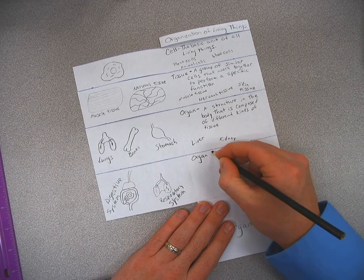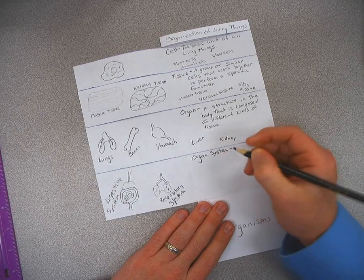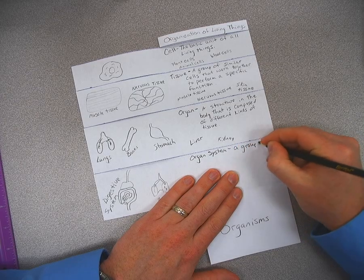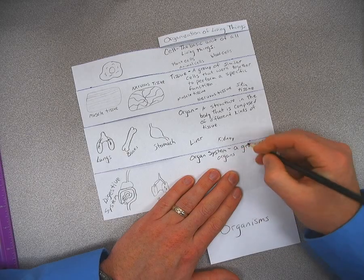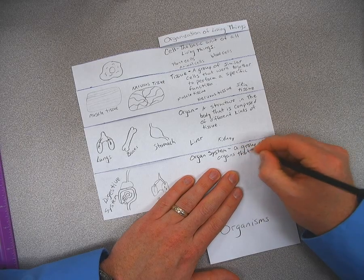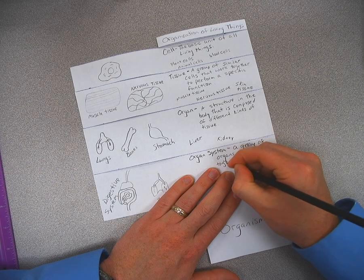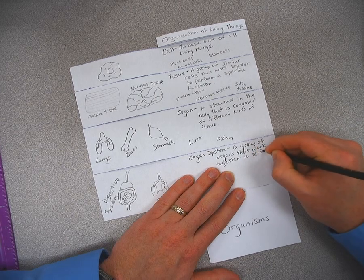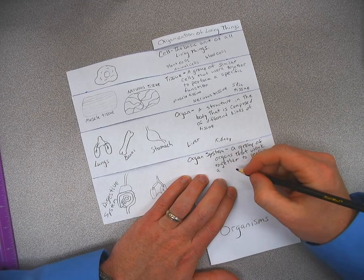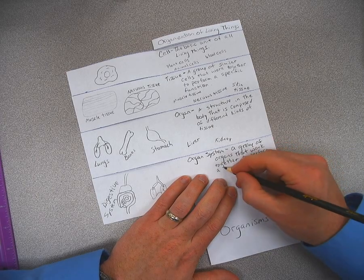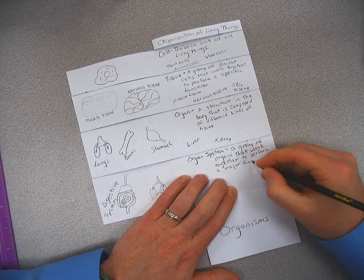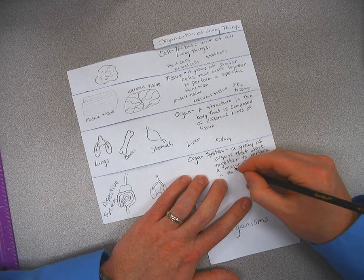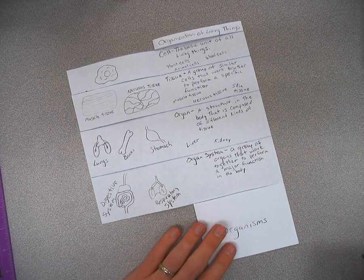Okay, so then here we're going to write our definition for organ system. Organ system is a group of organs work together to perform a major function in the body.